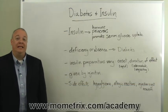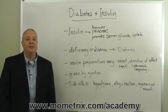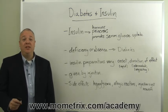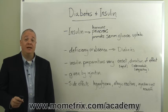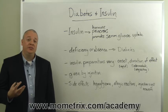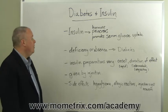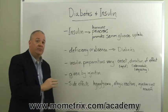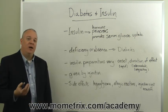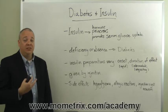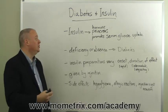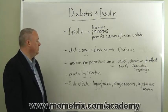Today we're going to talk about insulin and diabetes and the interrelationship there. Insulin is a hormone produced by the pancreas, necessary for the serum uptake of glucose. Where insulin is deficient or absent, we have diabetes. Insufficient or absent insulin prevents the serum uptake of glucose, and diabetes is the resulting diagnosis.